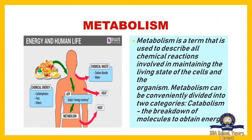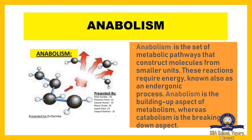Metabolism is a term used to describe the chemical reactions involved in maintaining the living state of cells. Metabolism can be divided into two categories: catabolism, which is the breaking down of molecules to obtain energy, and anabolism. Through chemical energy from carbohydrates, fats, and other sources, living beings gain energy to sustain life. Anabolism is the set of metabolic pathways that construct molecules from smaller units — it is an endergonic process, the building-up aspect of metabolism. It also supports cell division, allowing living beings to grow.